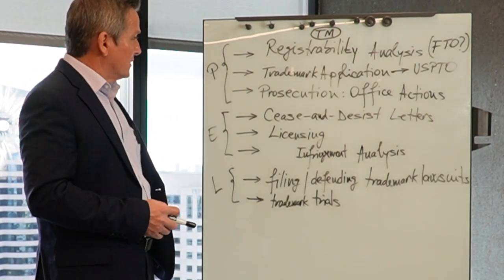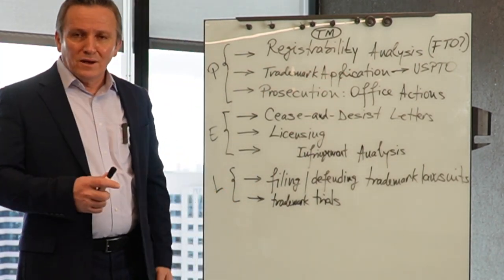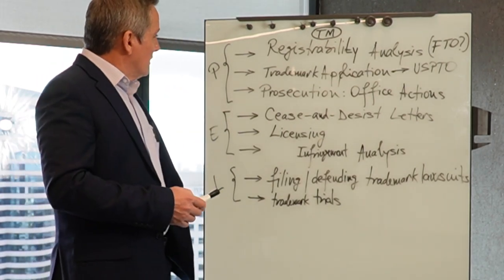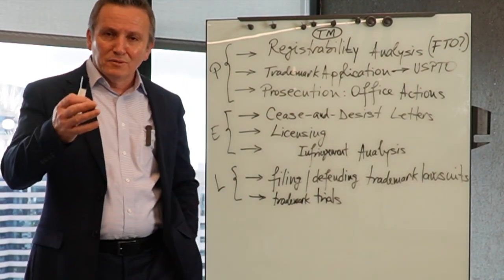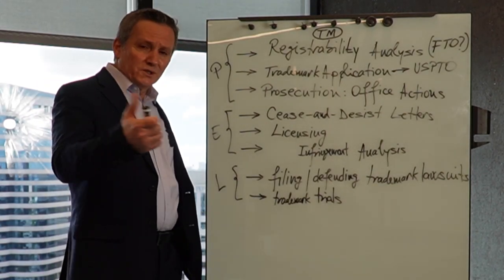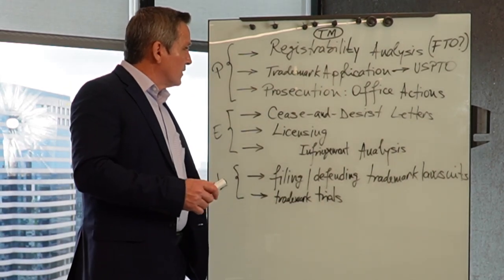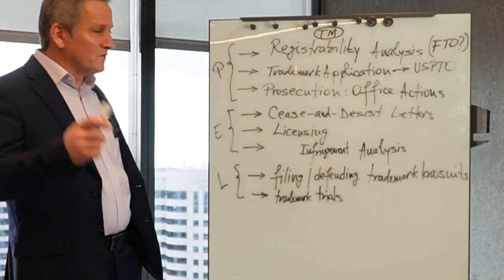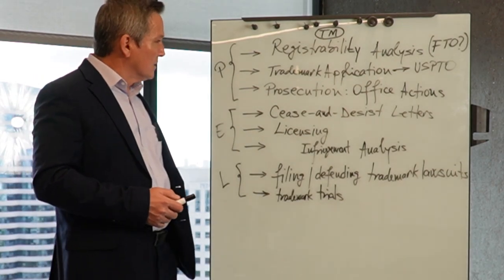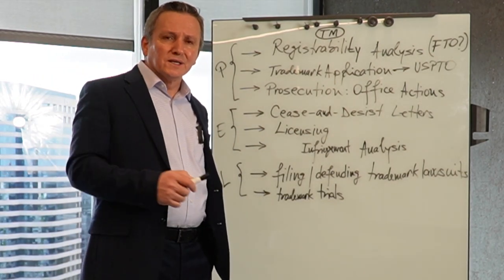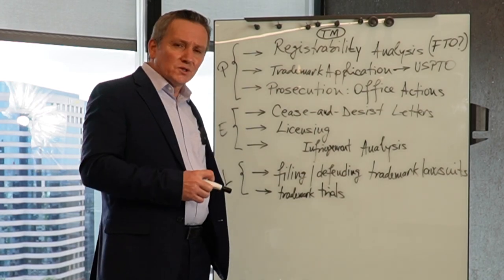Filing a trademark application may seem like a simple online form, but there are actually a lot of landmines. For example, the dates of use in commerce must be clearly and truthfully stated, and the quality of the specimen — which proves how the mark is used in commerce — matters greatly. You can also file what's called an intent-to-use application, but if use in commerce is claimed, you need to provide a proper specimen to prove that.